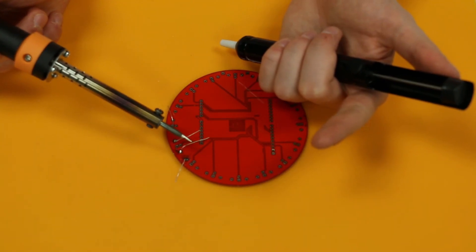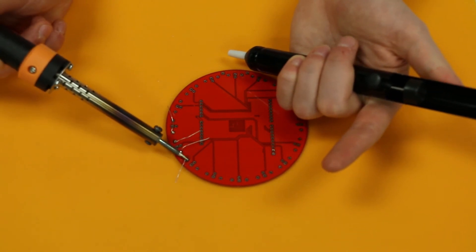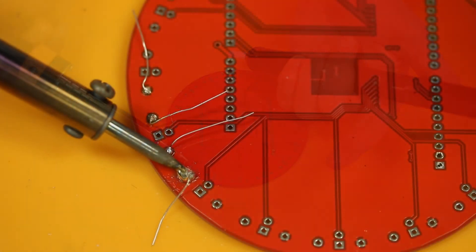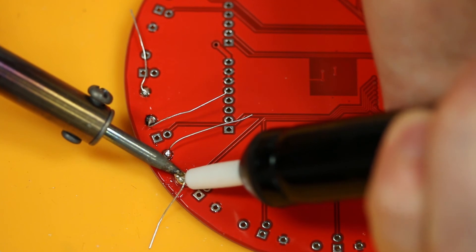So in order to use the solder sucker, your first step is to depress the plunger just like that. Heat up the area that you'd like to remove solder from. Put the tip of the solder sucker into that same area and press the button.